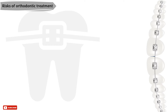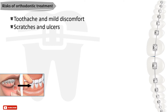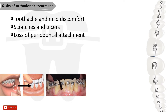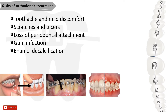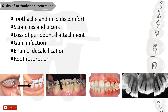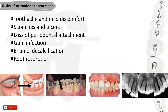Orthodontic treatment may come with some risks. These include toothache and mild discomfort, scratches and ulcers in the surrounding soft tissues. Even with good oral hygiene, a small loss of periodontal attachment is common, and with poor oral hygiene this will be increased. Gum infection and decalcification of enamel will occur if there are frequent sugar intakes between meals. Around 1–2 mm root resorption is associated with fixed appliance treatment, and in at-risk patients — those with shortened or blunt root shapes — this risk may increase. Tooth vitality might also be affected. Therefore, the potential benefits of orthodontic treatment must be sufficient to counterbalance these risks.